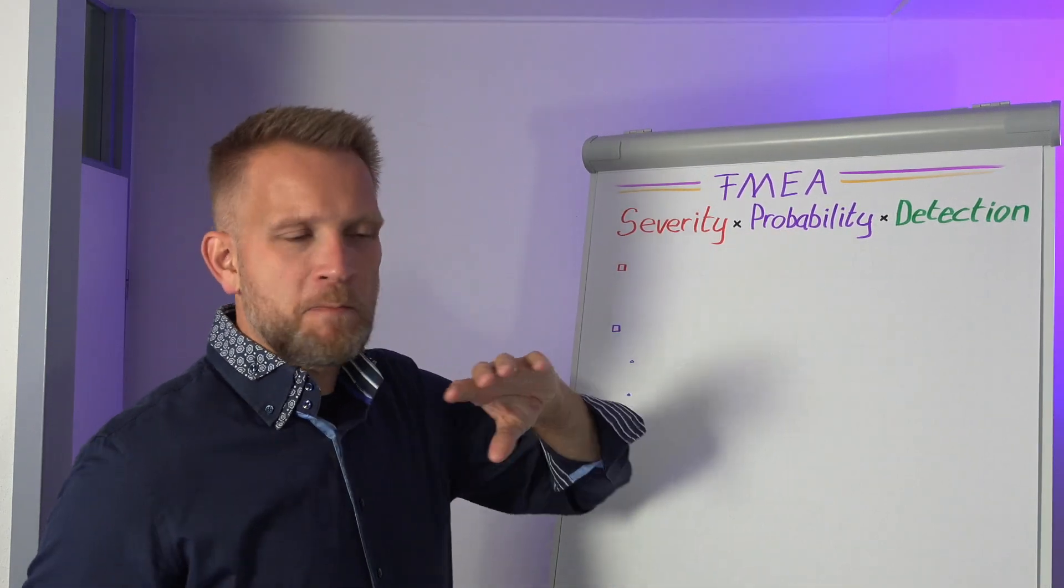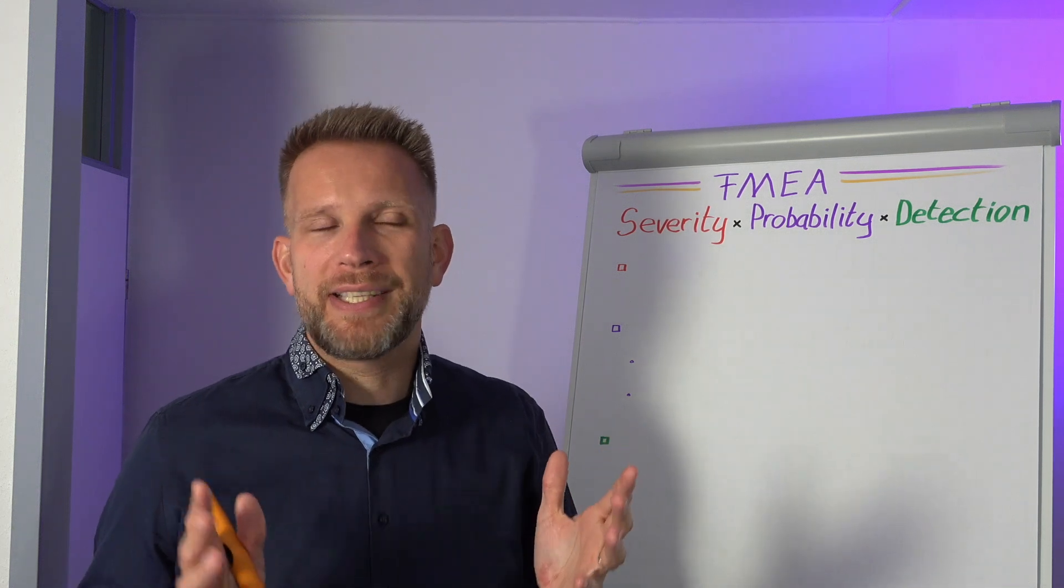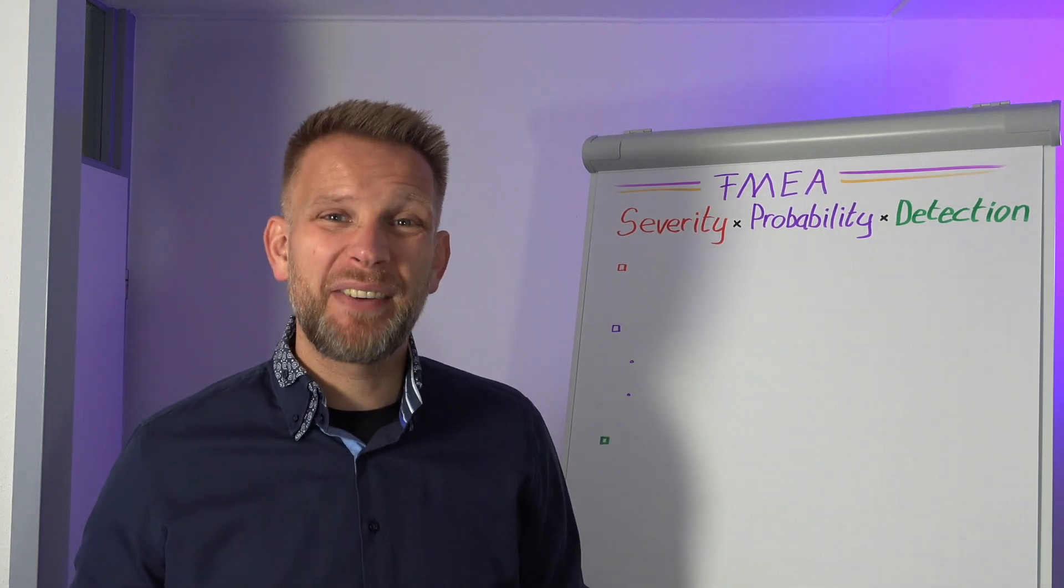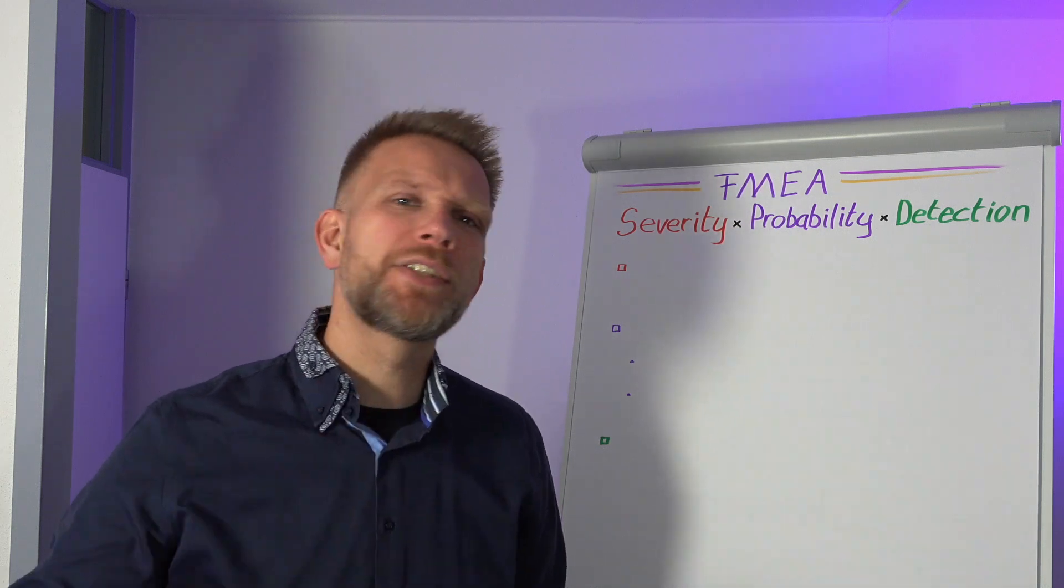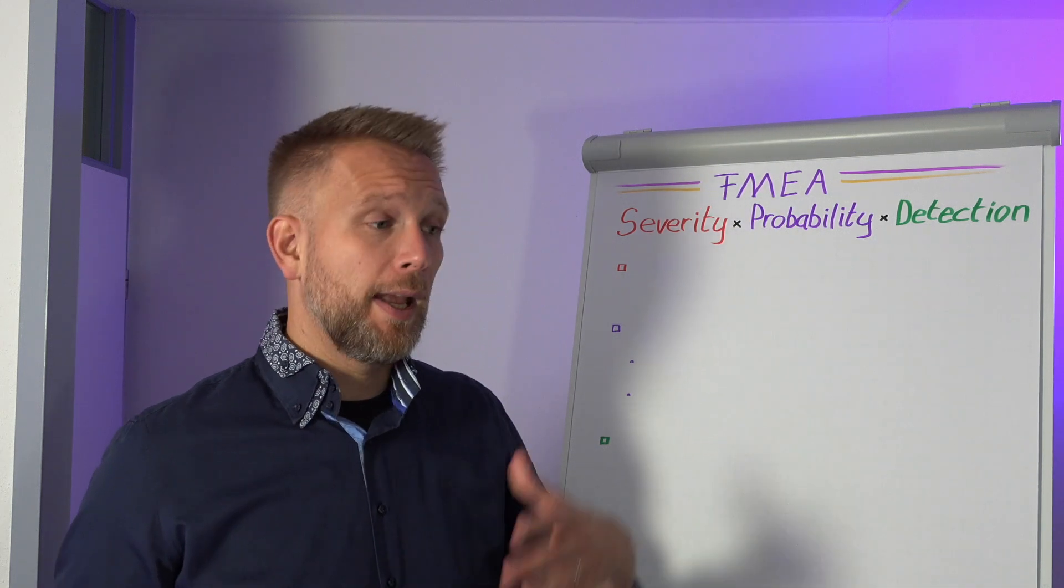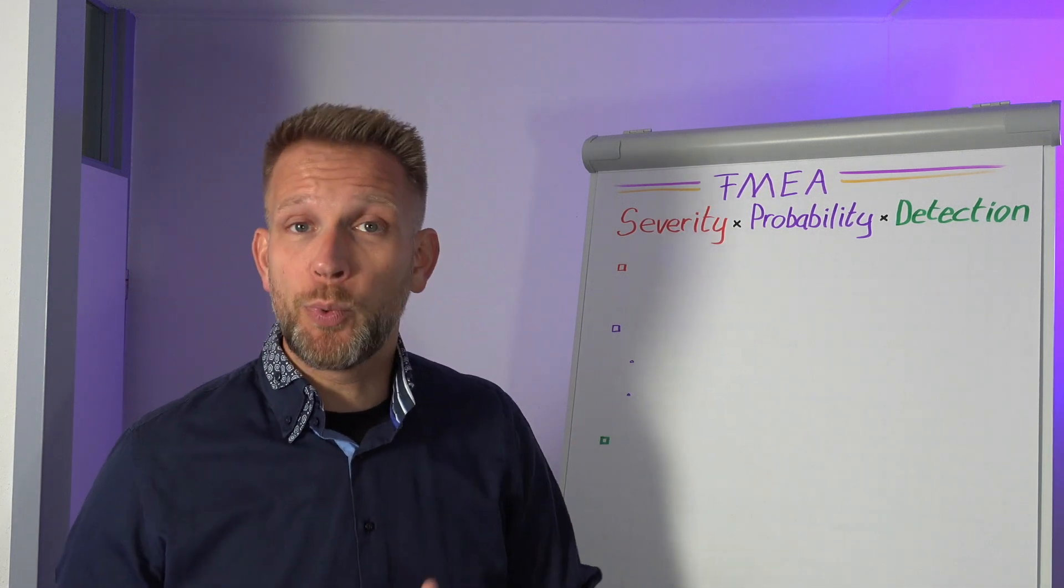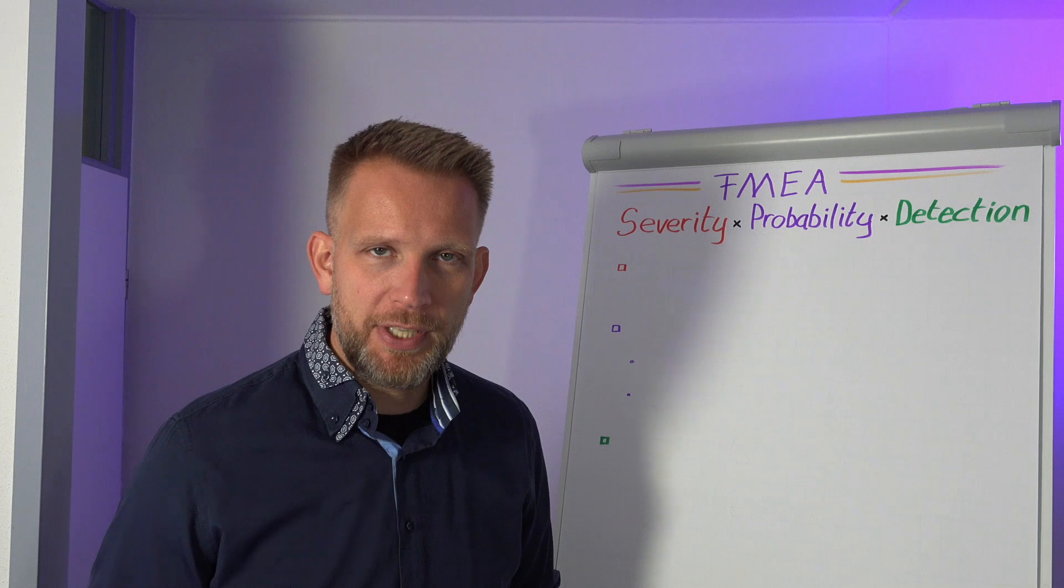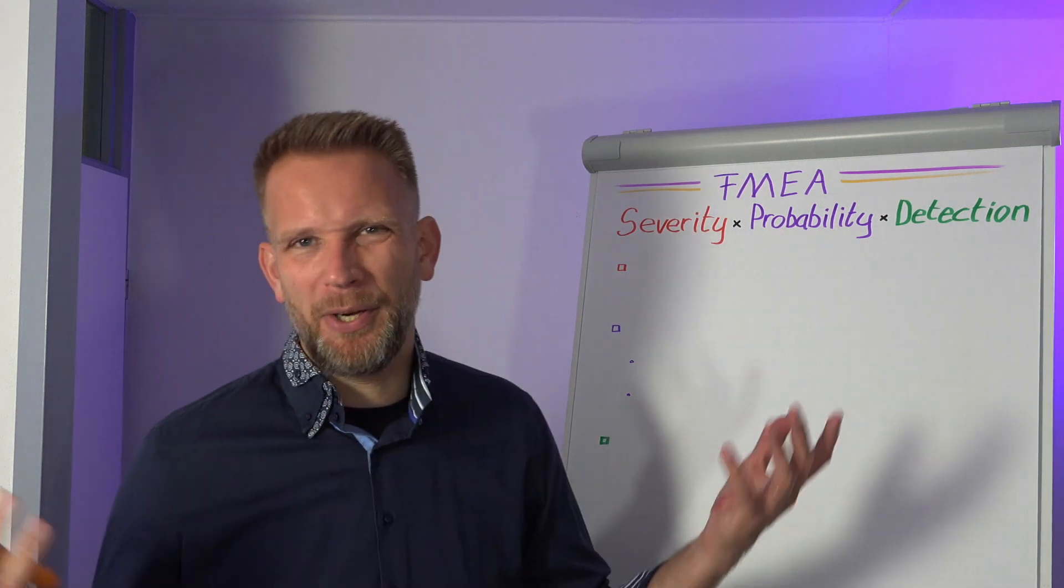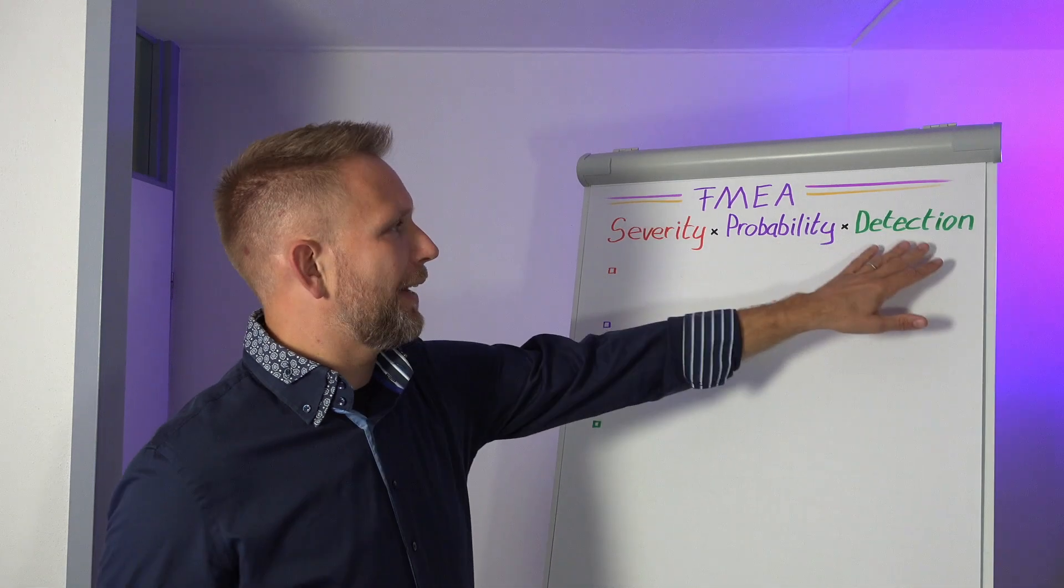For probability, if we're scaling one to five, then a one is this would almost never happen, we haven't really seen it yet, so it's really not yearly. A two is yearly, a three is monthly, four is weekly, and five is basically daily.